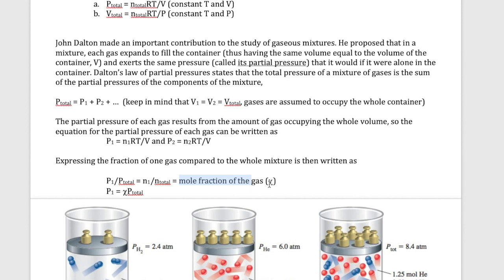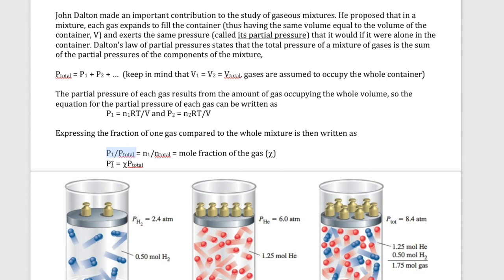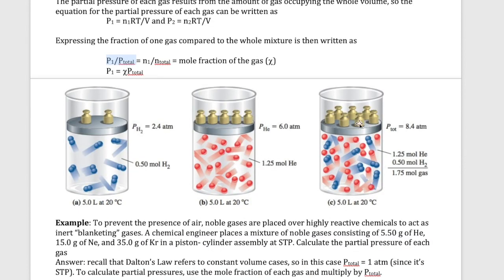The mole fraction of the gas has a symbol: chi, which looks like the letter X. So if you look at P1 over P_total, that's equal to chi. You can rearrange the expression so that P1 equals chi times P_total. This tells you that the partial pressure of one of the gases can be calculated by taking the mole fraction of that specific gas times the total pressure. This illustration shows how Dalton's law works for a mixture of gases — if hydrogen exerts 2.4 and helium exerts 6, combining them gives a total pressure that is just the sum of those two numbers.